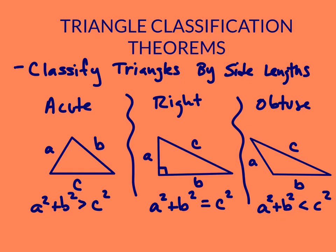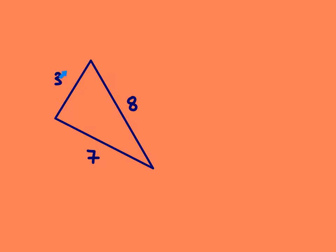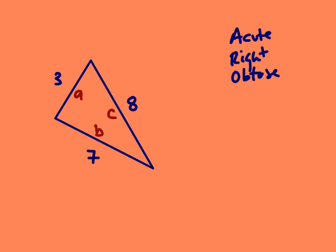Let's look at a practice problem. If I have a triangle with lengths 3, 7, and 8, we're trying to figure out what kind of triangle this is. We don't have any angle measures, so we're trying to determine whether this is an acute, right, or obtuse triangle. We need to use one of our formulas, setting up the two smaller sides as A and B and the longest side as C.